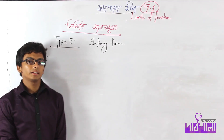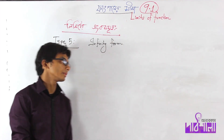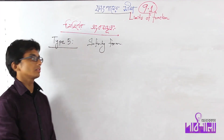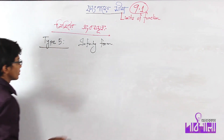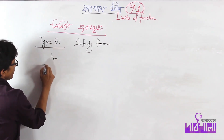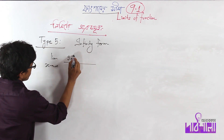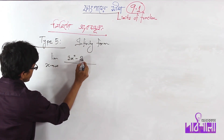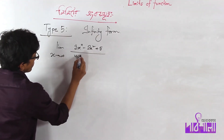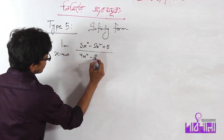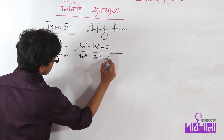This is Type 5 — the infinity form. It is a limit of the type infinity over infinity. So: limit x tends to infinity of (3x to the power 4 minus 2x squared plus 5) divided by (4x to the power 4 minus 2x cubed plus 7x squared minus 8x).